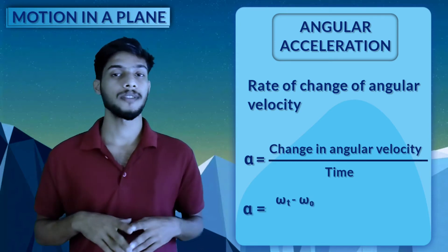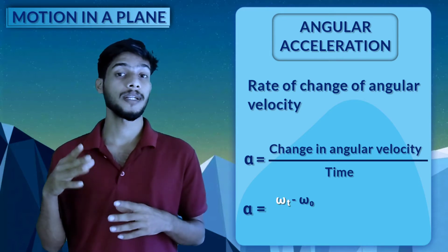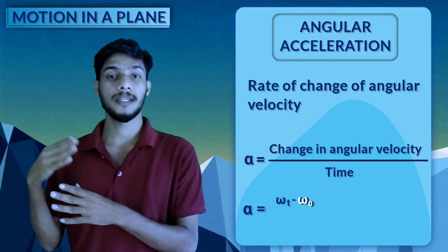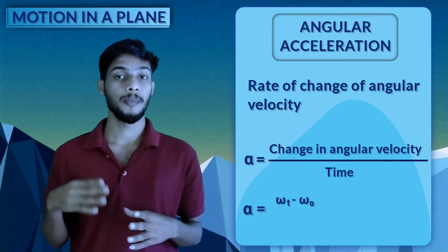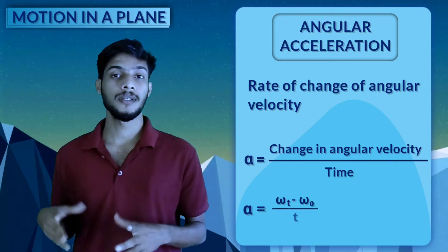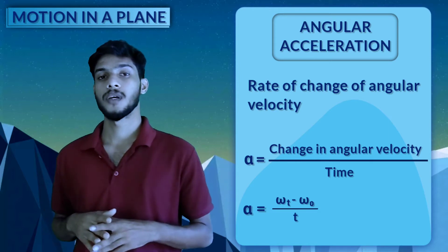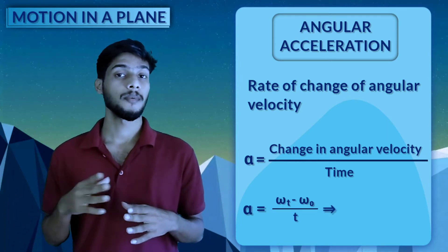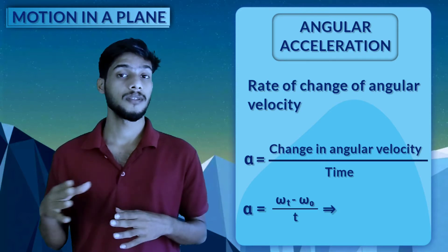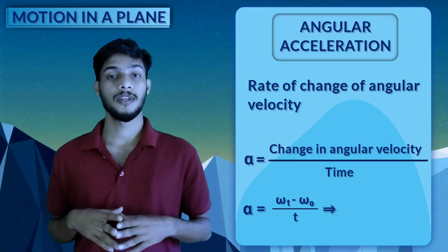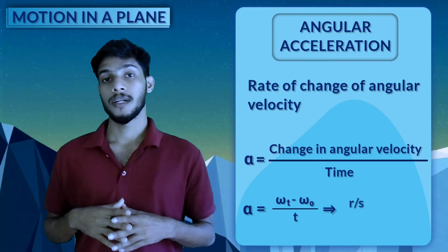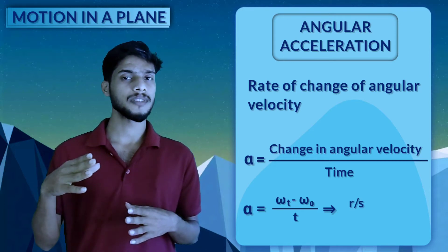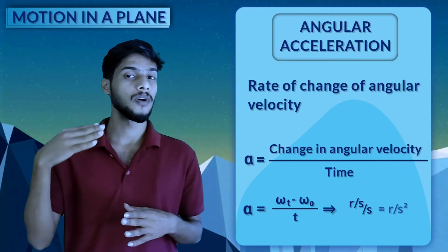Alpha equals omega-t minus omega-zero divided by T. Omega-t is the angular velocity at time T, and omega-zero is the initial angular velocity. The unit of angular acceleration is radians per second divided by second, which equals radians per second squared.